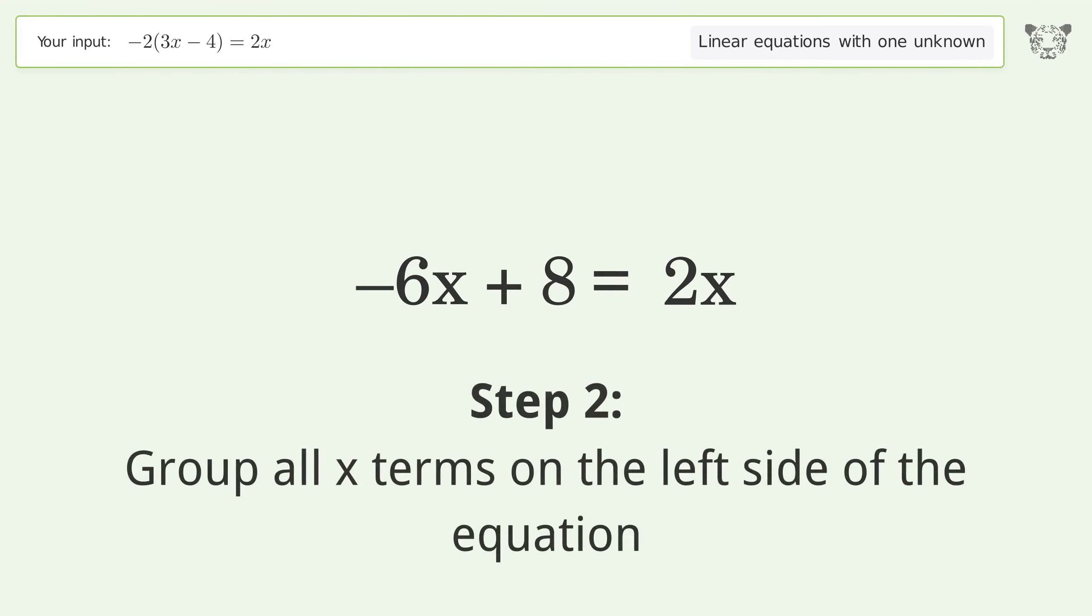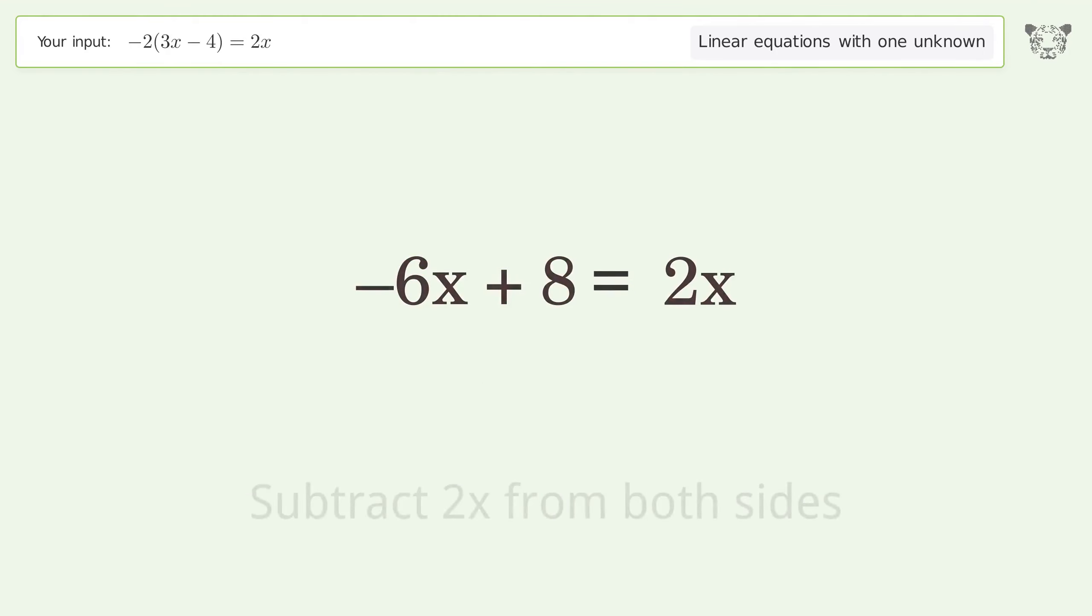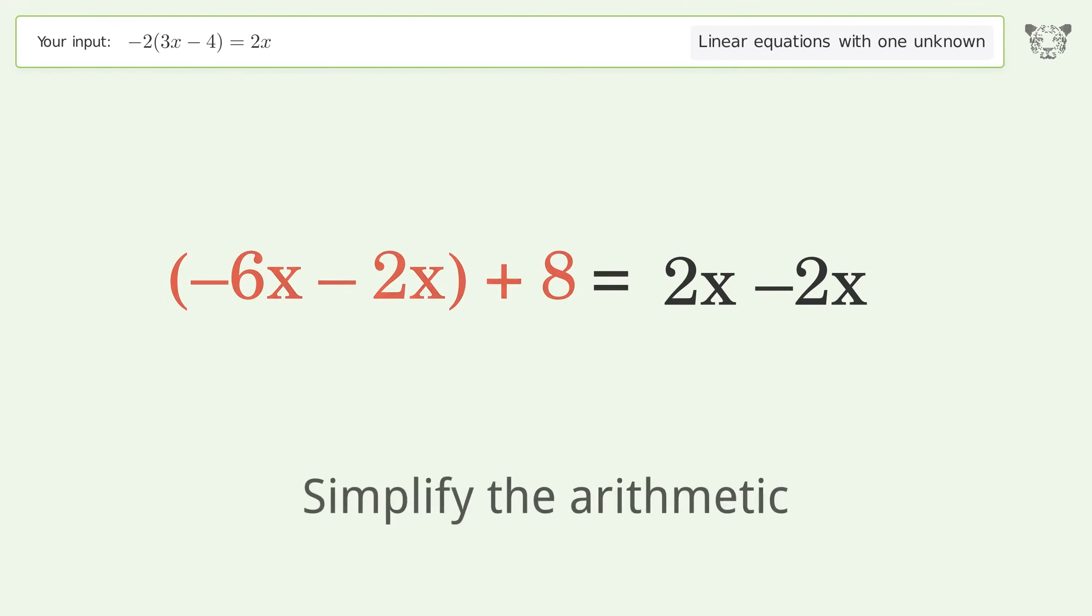Group all x terms on the left side of the equation. Subtract 2x from both sides. Group like terms. Simplify the arithmetic.